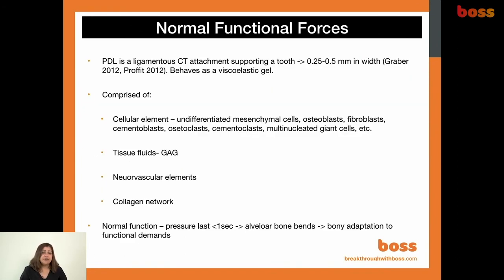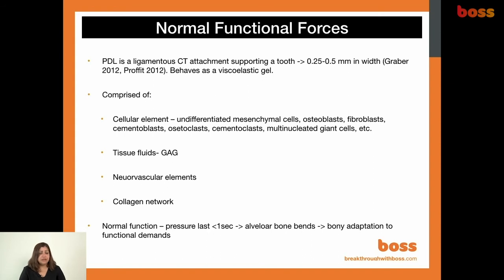The periodontal tissue is a connective tissue attachment, 0.25 to 0.5 mm in width depending on the tooth, and it is a viscoelastic gel. It has cellular elements, tissue fluids, neurovascular elements, and a collagen network. Its normal function is to protect the tooth from discomfort. If pressure is applied for less than one second, alveolar bone will bend — bone adaptation to functional demands is what the PDL does best.